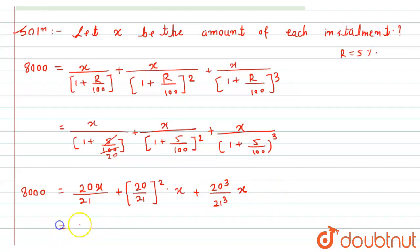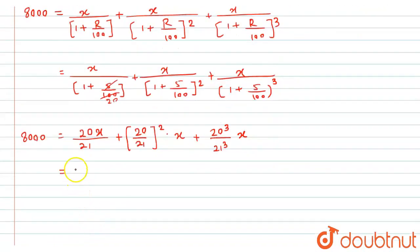Now, we can take x as a common. That is, 20 of x divided by 21. Thik hai, hum isse common kar sakte hai. Toh yahan pe kya bach jayega? 1 plus 20 by 21. Thik hai? Yahan pe reh jayega 20 into 20 divided by 21 into 21. Thik hai? Aya, ye kis ke equal reh jayega. Sum of amount ke. That is, 8000.